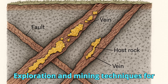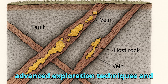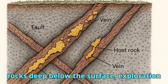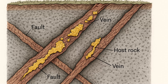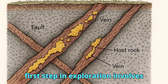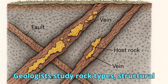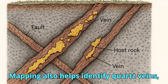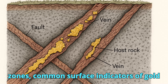Exploration and Mining Techniques for Primary Gold Deposits. Finding and extracting gold from primary deposits is a complex process involving advanced exploration techniques and carefully planned mining operations. Since primary gold is locked within hard rocks deep below the surface, exploration is significantly more challenging compared to placer deposits. The first step is geological mapping — geologists study rock types, structural features like faults and folds, and alteration zones that may signal hydrothermal fluids, as well as quartz veins, iron-stained outcrops, and sulfide-rich zones.